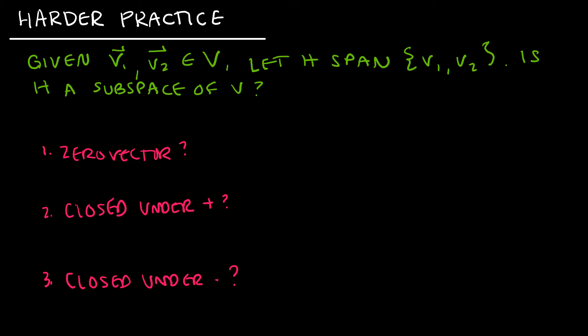Let's do a harder practice question. If I'm given that V1 and V2 are vectors in the vector space V, and H spans V1, V2, is H a subspace of V? Before we check our properties, just recall that this is telling me I should be able to write everything as a scalar times the vector plus a scalar times the vector. I can write it as a linear combination of those vectors. Is the zero vector in H? I can certainly write 0·V1 plus 0·V2, and that would be the zero vector, and it would be in H. So yes.